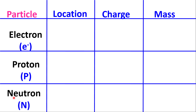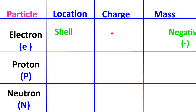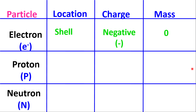Now let us talk about the subatomic particles that are found inside of the atom. The subatomic particles are electrons, protons, and neutrons. An electron can be symbolized with an E minus. A proton can be symbolized with a P, and a neutron with an N. Electrons are found on the shell of the atom. The charge of an electron will be negative. The relative mass of an electron will be zero — electrons do have mass, but the mass is very small, so in terms of ease of calculation, we will consider the relative mass of an electron to be zero grams.